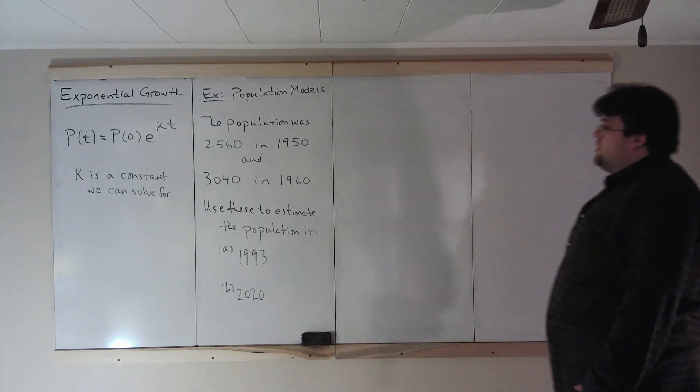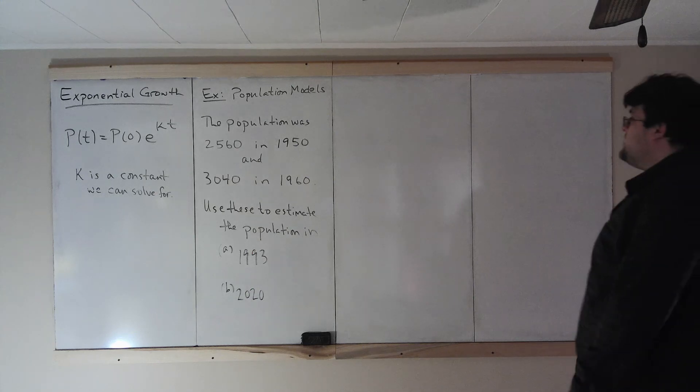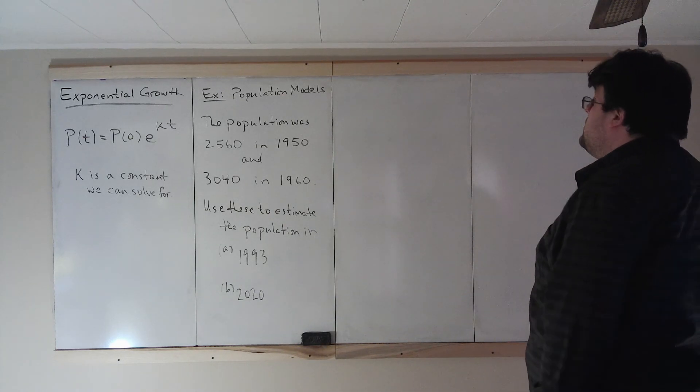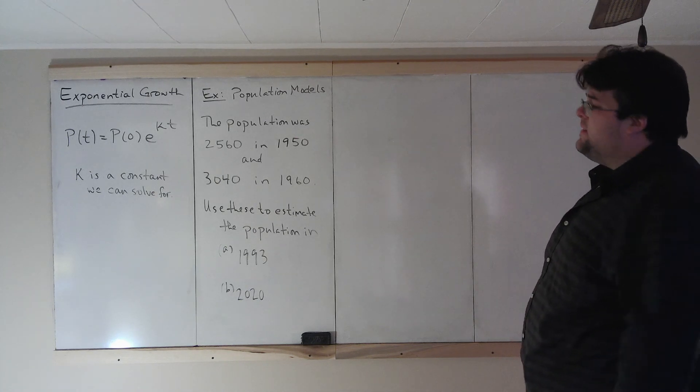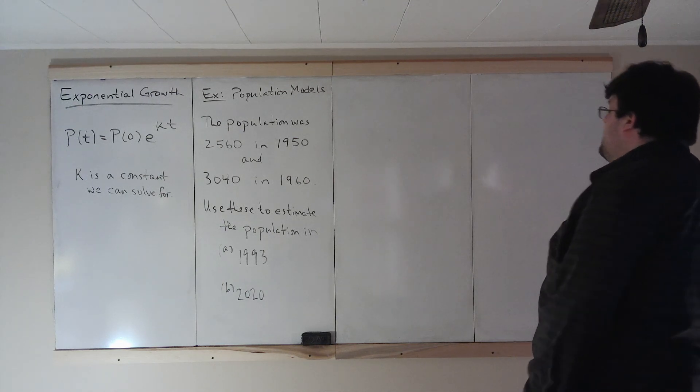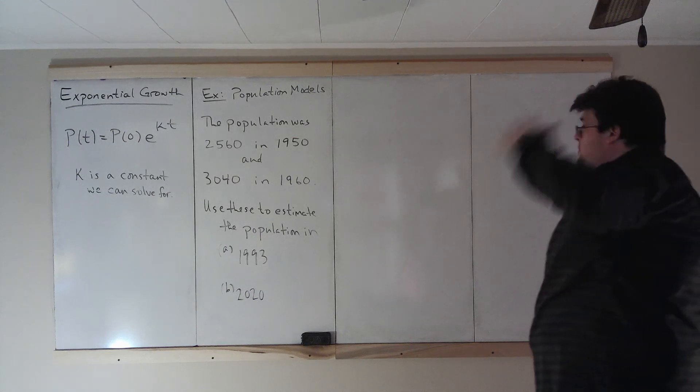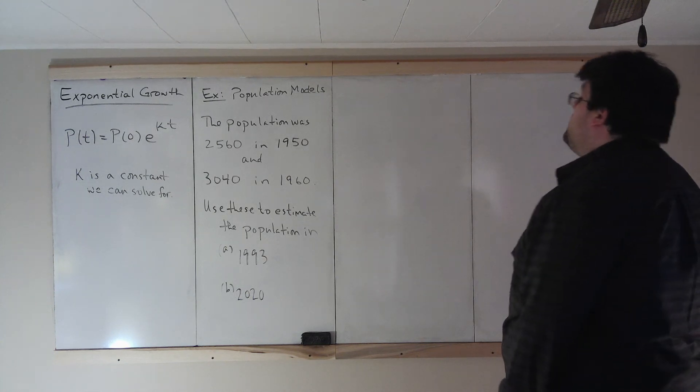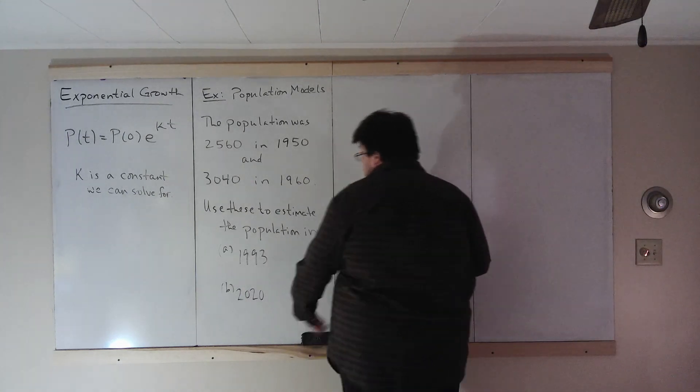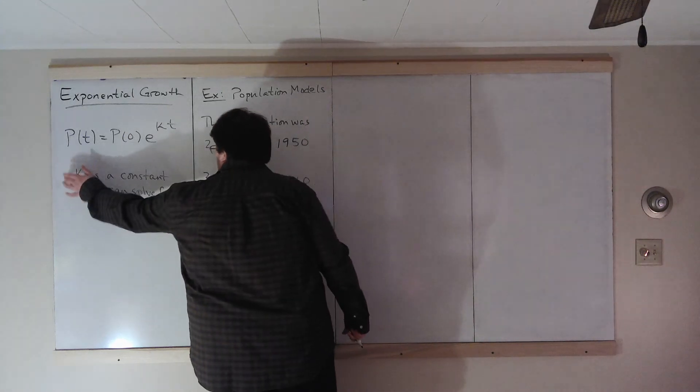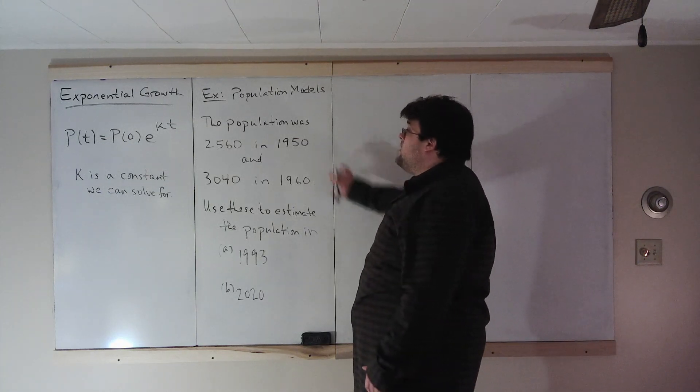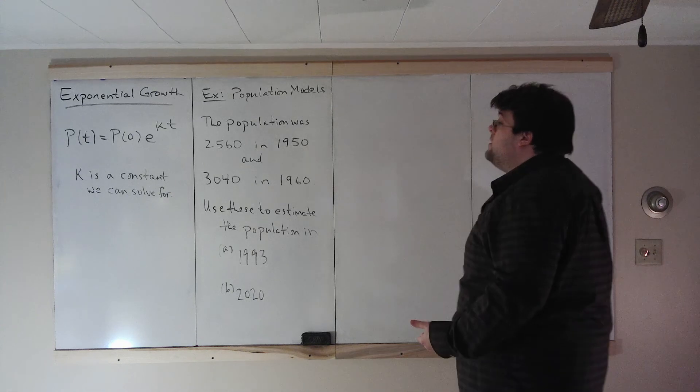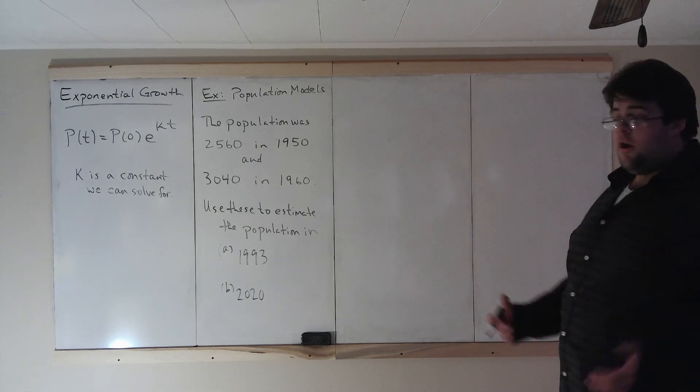The first model we're going to look at is population. Population grows at a rate proportional to its size. We're going to use this information to find that constant and then use that to answer a couple questions. The population was 2,560 in 1950 and 3,040 in 1960. Use these to estimate the population in 1993 and 2020. So the first thing we have to do is find our growth constant k. Here, our zero quantity, our base quantity, will be the year 1950, and any time is measured from that base year.